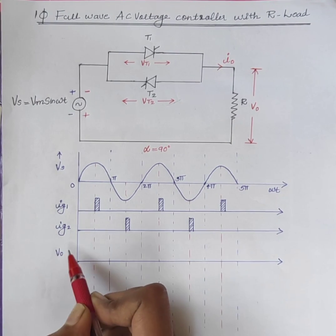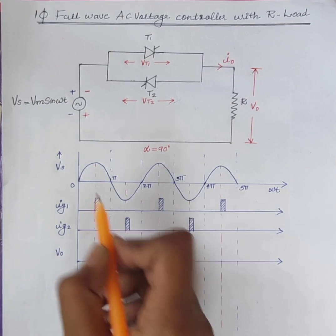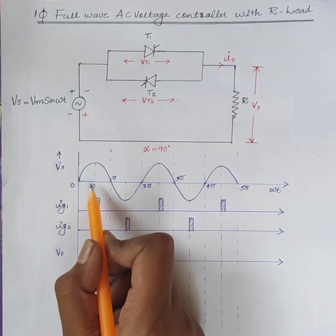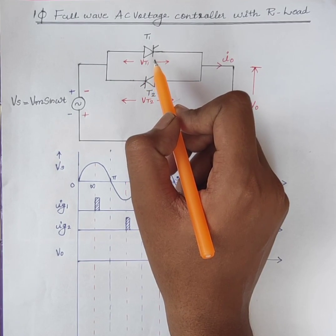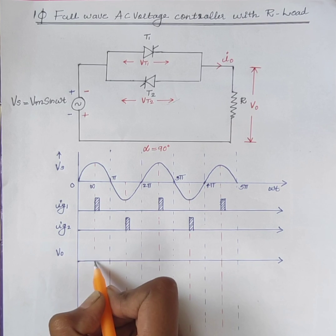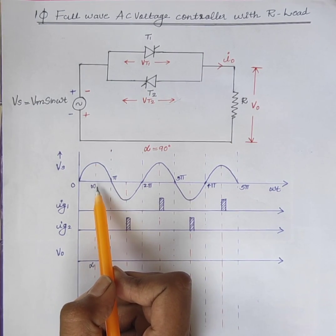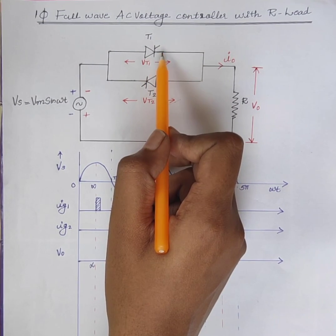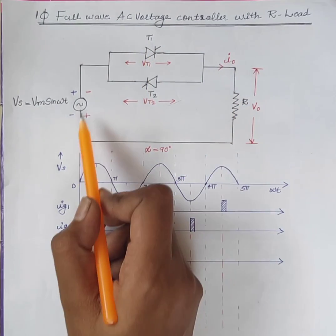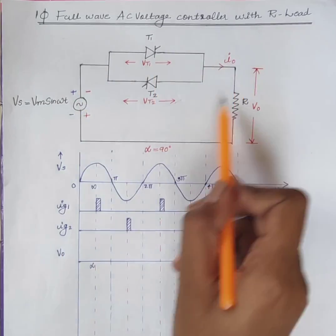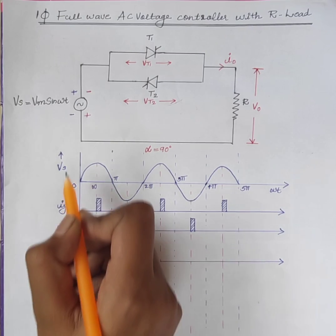Now we can see the output voltage waveform when firing angle alpha is equal to 90 degrees. Consider the positive half cycle from 0 to pi. From 0 to alpha, thyristor T1 is forward biased but no firing pulses are given to T1. Therefore, T1 acts as an open switch and the output voltage is 0 during this interval. At omega-t equal to alpha, that is at 90 degrees, firing pulses are given to T1 and T1 starts conducting. Current flows through the path Vs, T1, load, back to source. So from alpha to pi, V0 is equal to Vs.